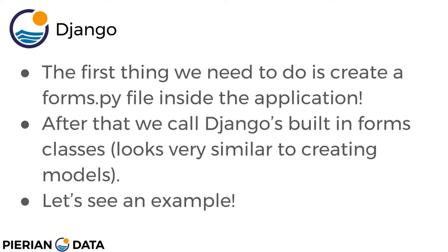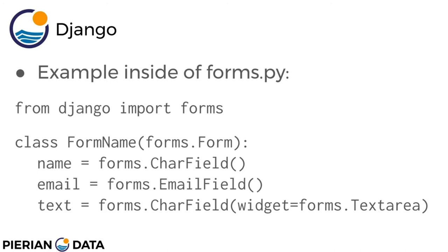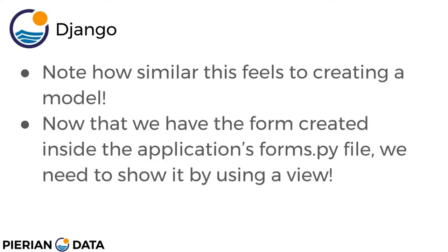After that we call Django's built-in forms classes, which looks very similar to creating a model in Django. An example of what would be inside your forms.py file would look something like this: you say 'from django import forms', then you have a class FormName(forms.Form) where every input is essentially a class object attribute. You should notice this looks a lot like creating a model with Django, so you don't need to relearn a completely different paradigm.